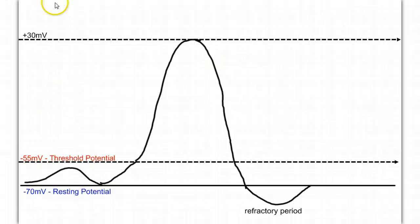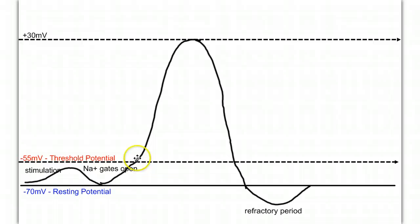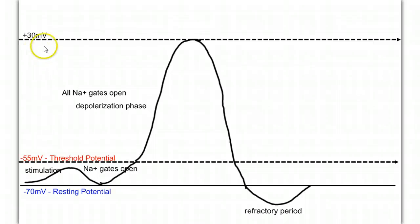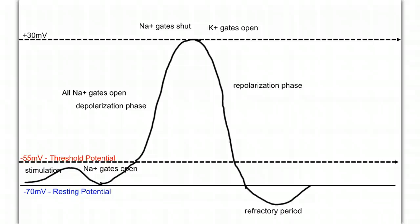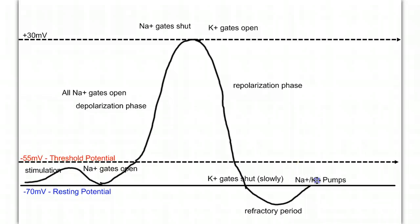To recap again: if we have stimulation, sodium gates open and we depolarize the membrane. If we depolarize to reach threshold of negative 55 millivolts, all the sodium gates open and we have our depolarization phase of the action potential. Once we reach a voltage of positive 30 millivolts, the sodium gates shut, the potassium gates open, and we begin our repolarization phase. When we return to our negative 70 millivolts resting potential, the sodium gates will shut, and our sodium-potassium pumps begin to restore the ions back to the starting sides of the membrane. During this time, called the refractory period, that patch of membrane cannot fire again.